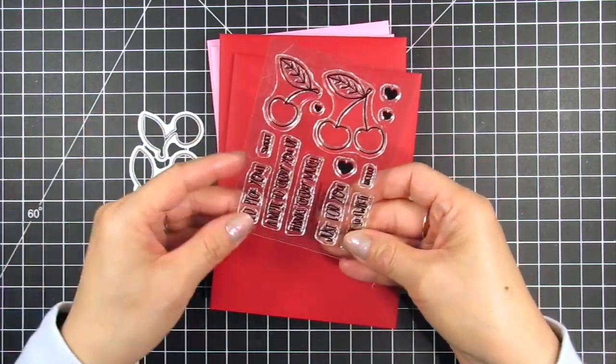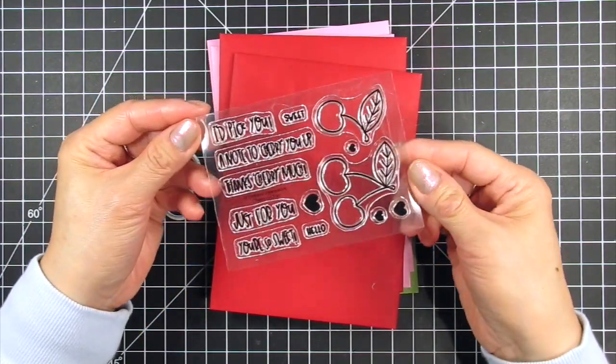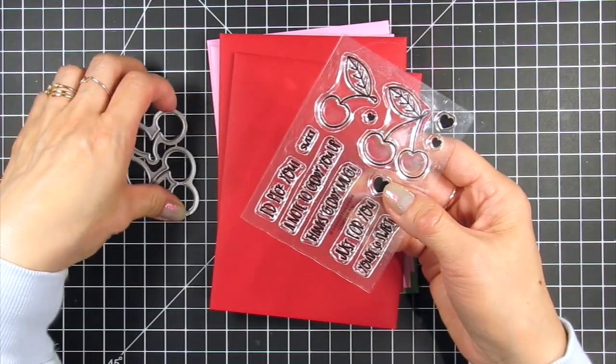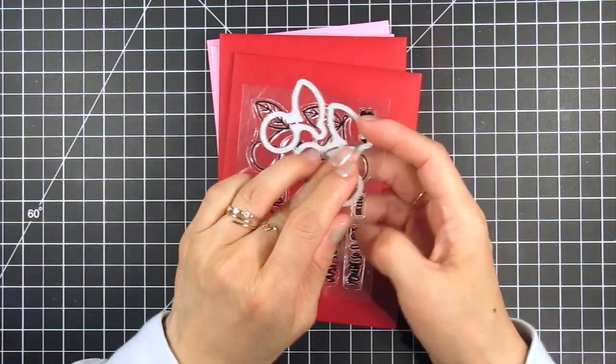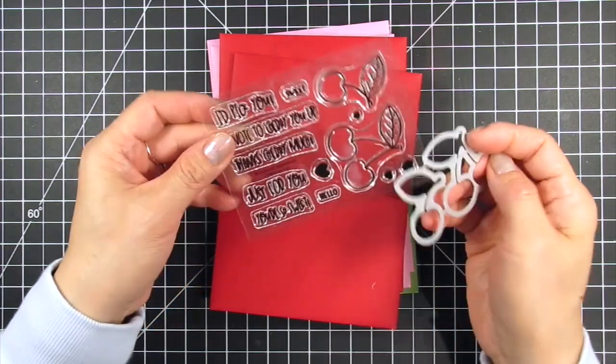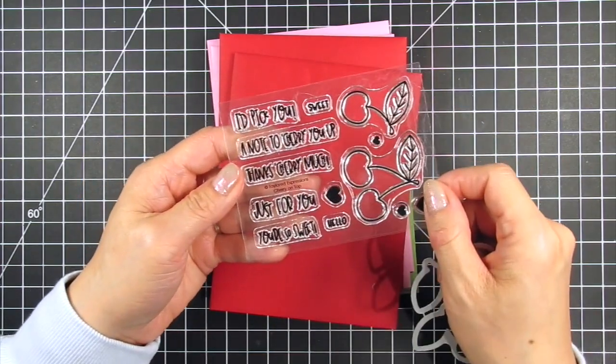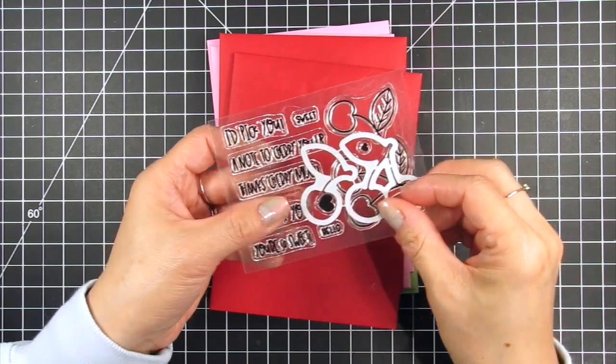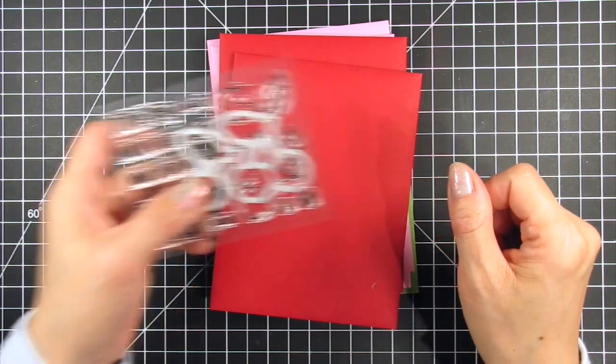This is the cherry on top mini stamp set and its coordinating dies. The filler stamps that come with the Very Cherry cling background will also fill in these cherries and leaves. This stamp set also includes five sweet and punny sentiments, two little words and four hearts in different sizes.